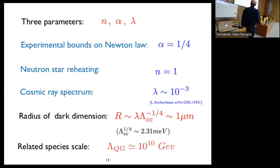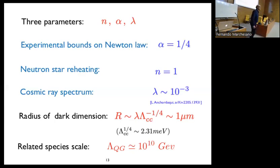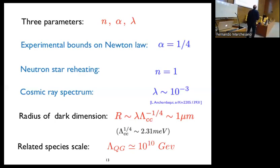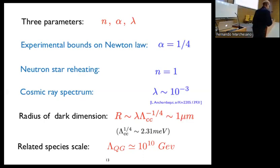Putting these together, we get a radius of the dark dimension of order one micrometer. Using the experimental input of the cosmological constant — which is 2.3 meV to the fourth — one can also easily compute the related species scale, the cutoff scale for the effective field theory, which is about 10^10 GeV. So indeed there is a big discrepancy between the milli-eV mass scale in the infrared and the UV cutoff scale of 10^10 GeV, which shows the importance of the species scale in this scenario.